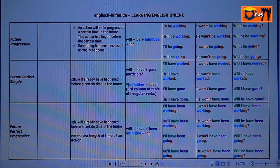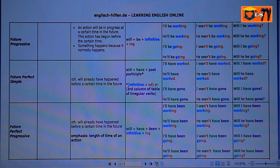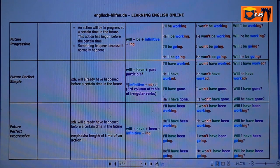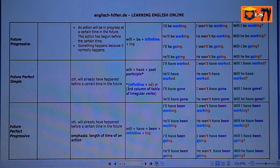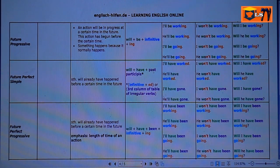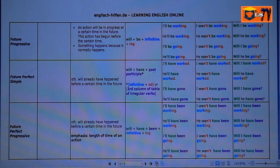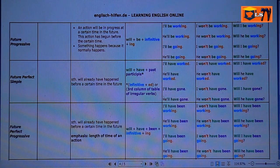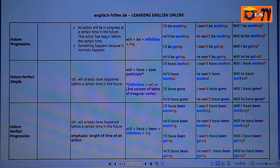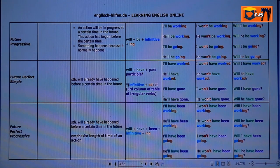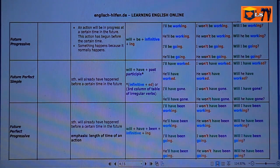This action has begun before the certain time. Secondly, something happens because it normally happens. That's the use of Future Progressive. As you can see in this table, the form of future is as follows.